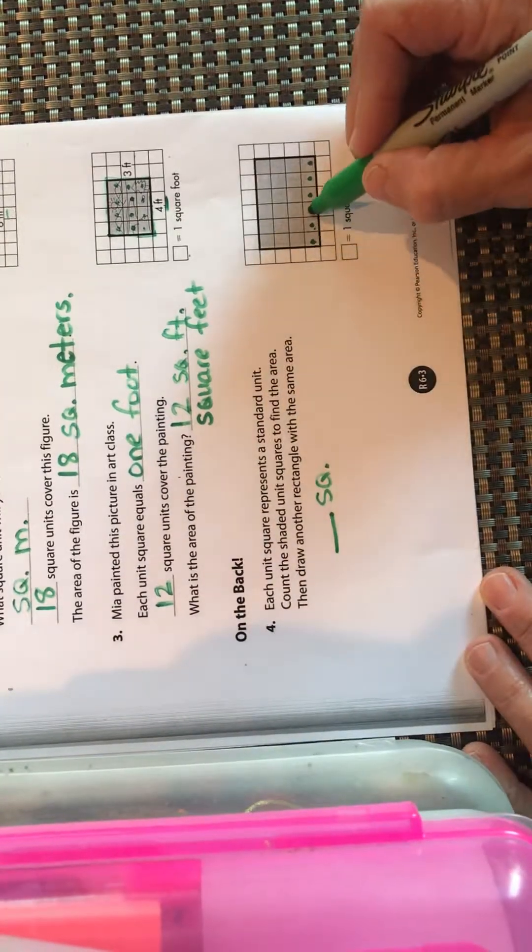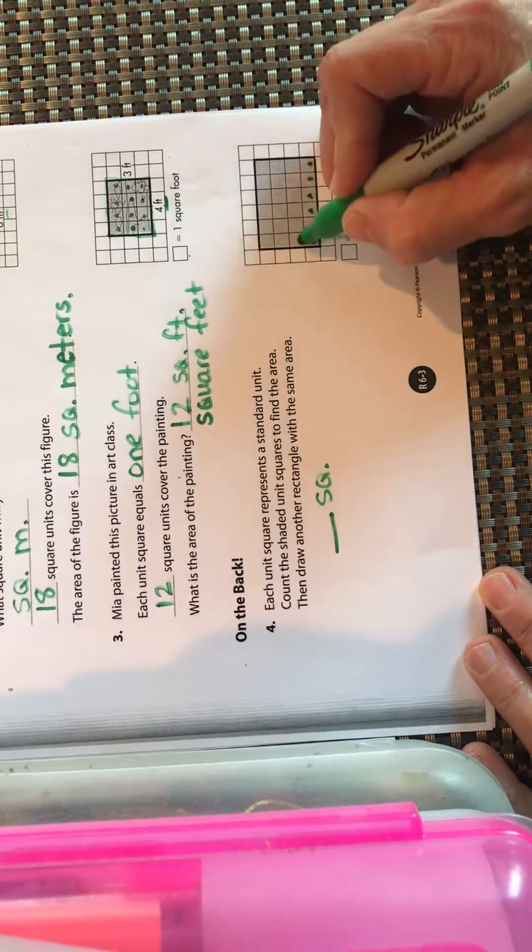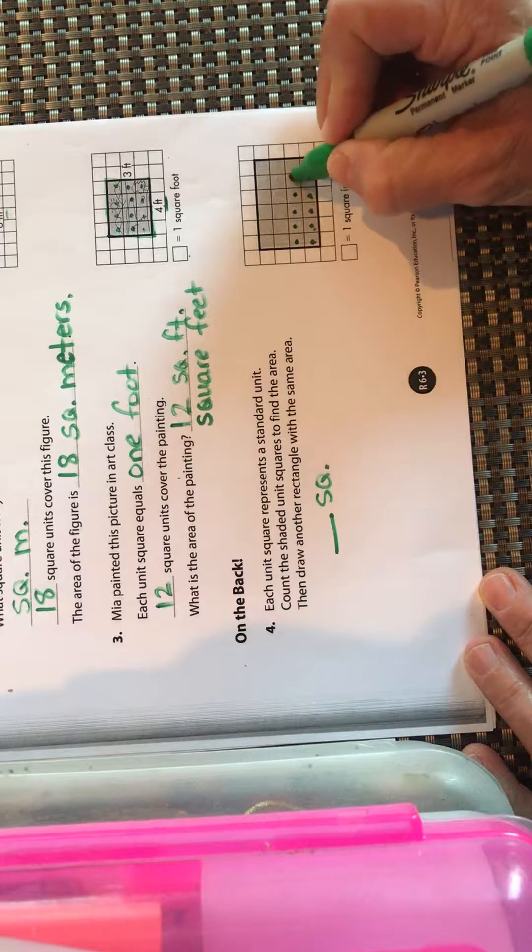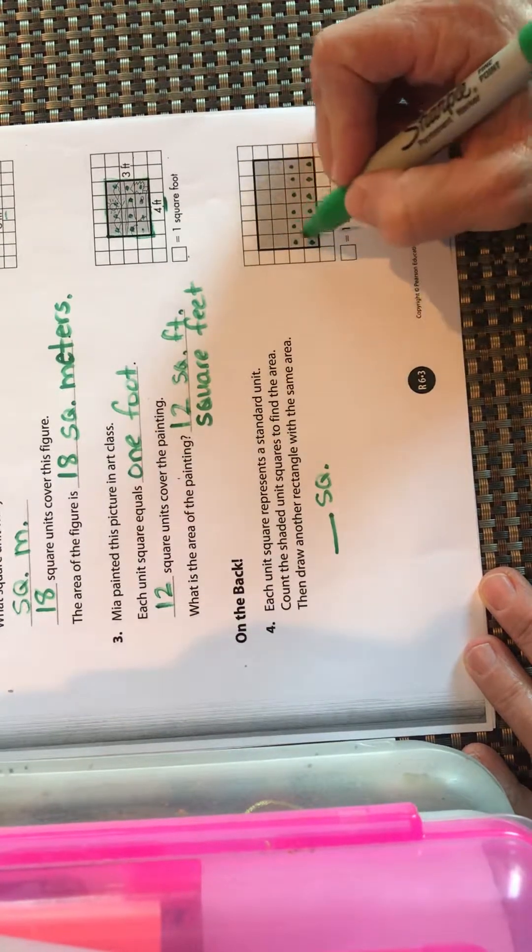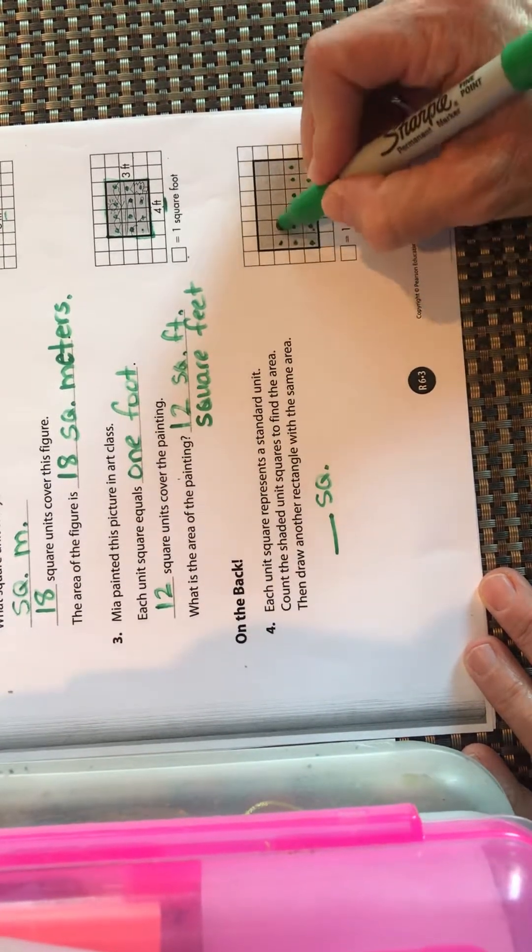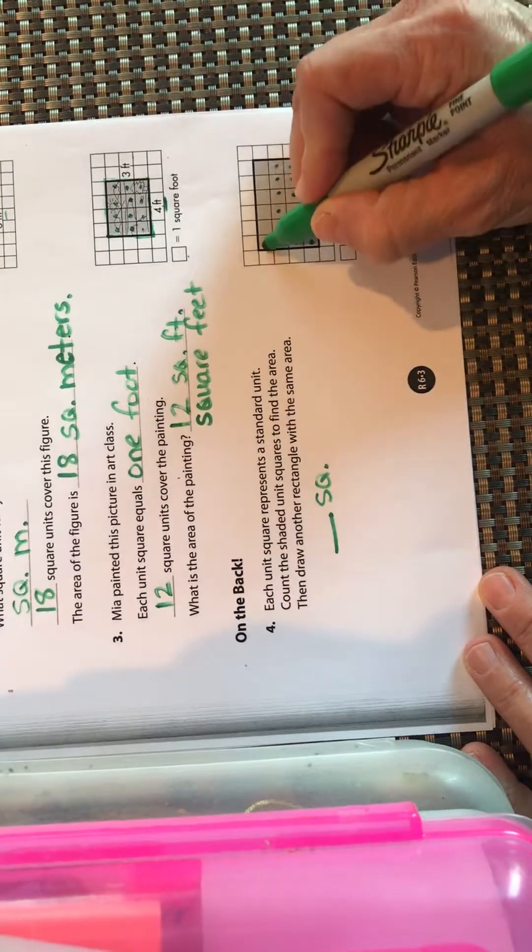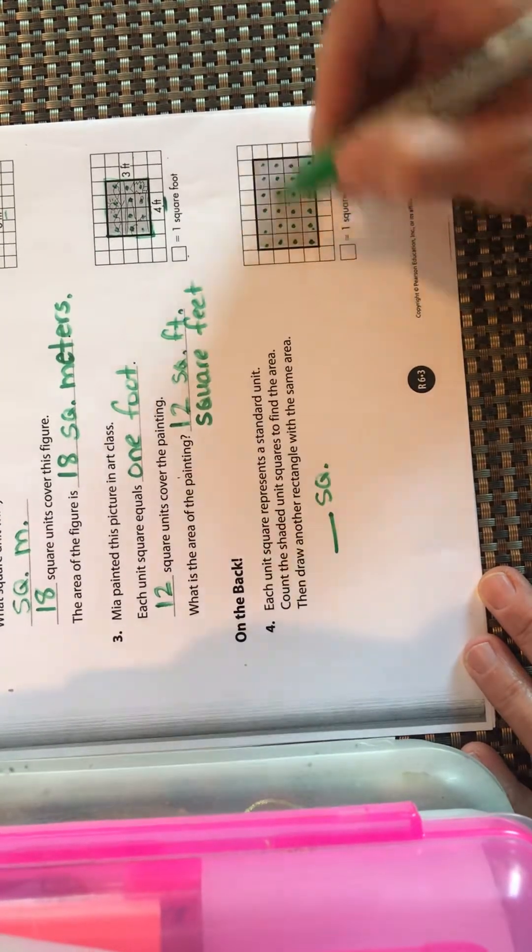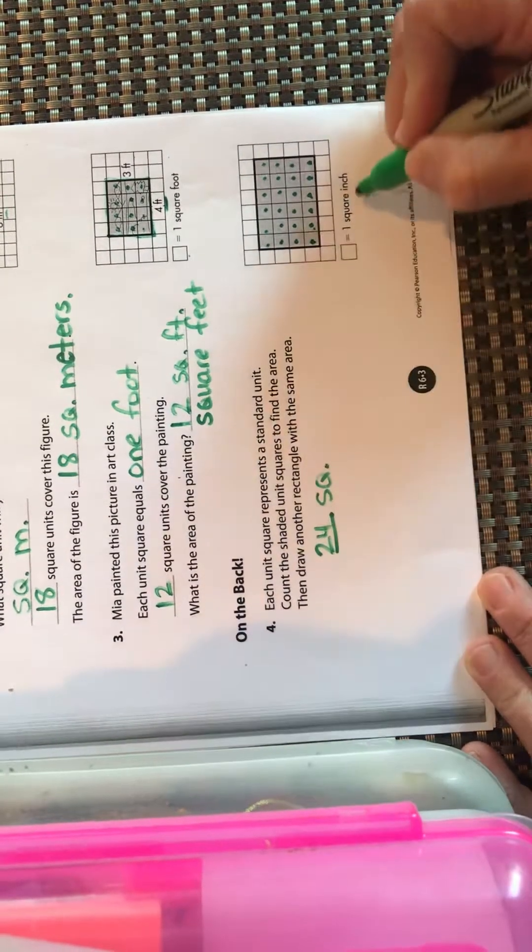Okay, so one, two, three, four, five, six, two, three, four, five, six. That's 12. If this is 12, that's 12, that's 18, and 24. So 24 square inches, or you could write out inches.